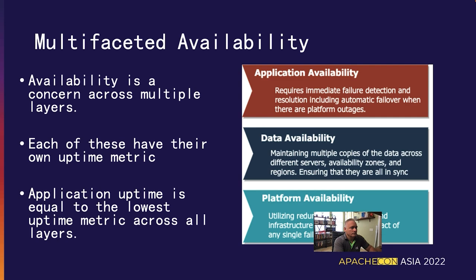When people use the term availability, they tend to think only of platform availability — is the system up or down? This is because availability is generally considered a DevOps concern, but it is also an application and data concern. One approach to high availability is to distribute platform resources across different zones and geographical regions. While necessary, this isn't sufficient for continuous availability. The data used by the system must be kept in sync across zones and regions as well. A system with a missing or incomplete dataset is often worse than having no system at all, as it can lead to incorrect information or duplicate processing of data.